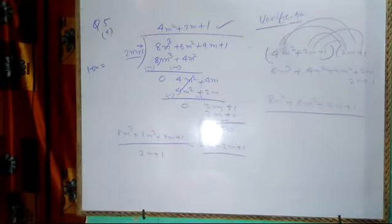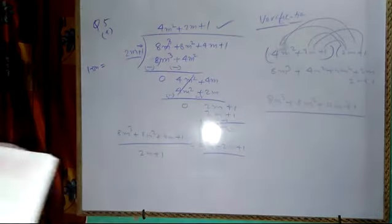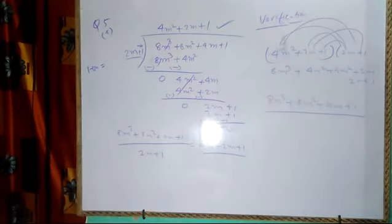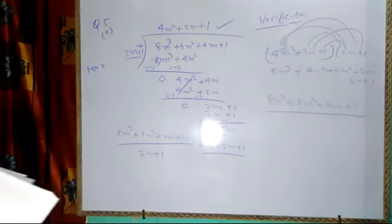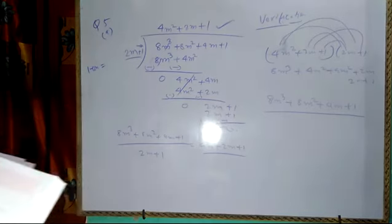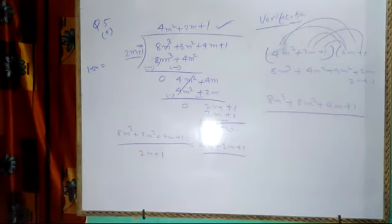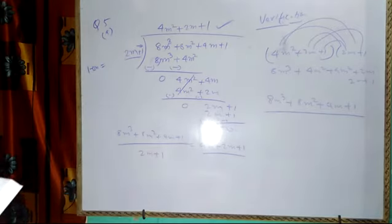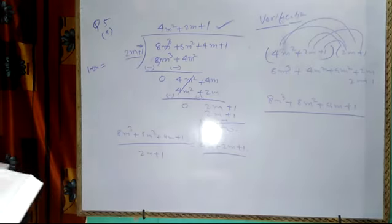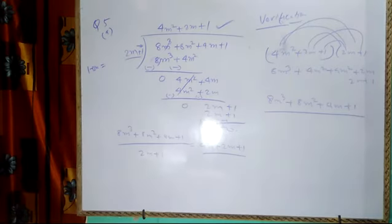In this way you are supposed to solve all the remaining sums. Question number 6 follows the same procedure as well as question number 7. In question number 7 you have a trinomial as the divisor, and in question number 2 you have a binomial as the divisor with the highest degree of 2. I hope you will not have any problem — please try to solve them.